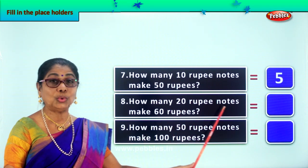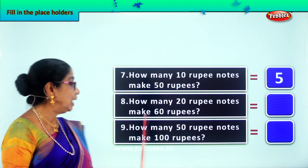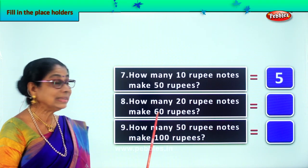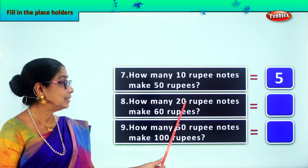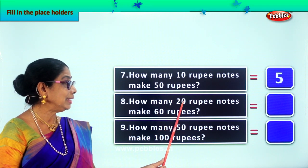So 20, 40, 60. We need 3 twenty-rupee notes to make 60 rupees.